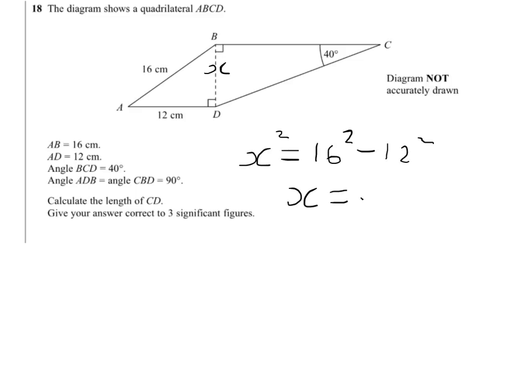So X will equal the square root of 16 squared minus 12 squared. You need to work that out with your calculator, which equals 10.583.